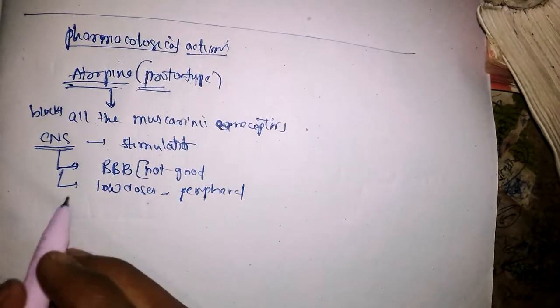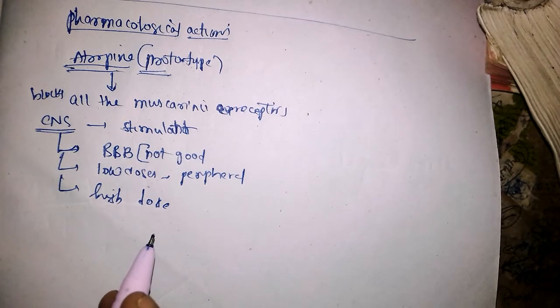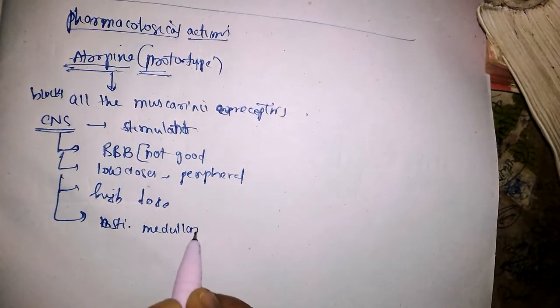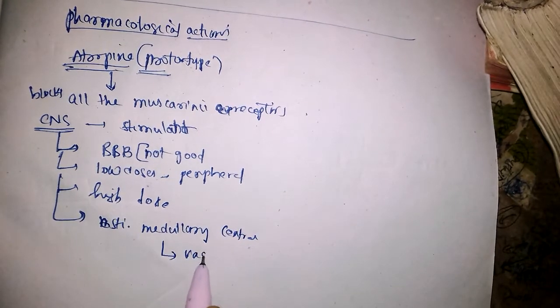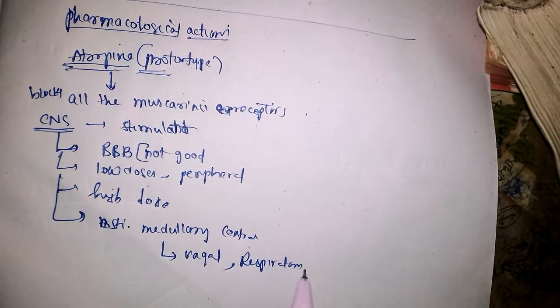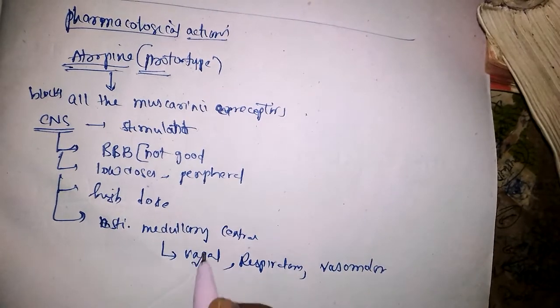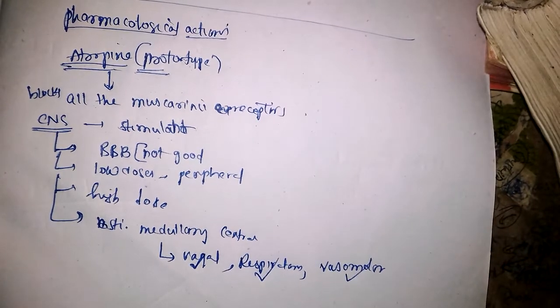If you want CNS action, then we have to give high doses. At high doses, atropine stimulates medullary centers — including the vagal center, respiratory center, and vasomotor center.